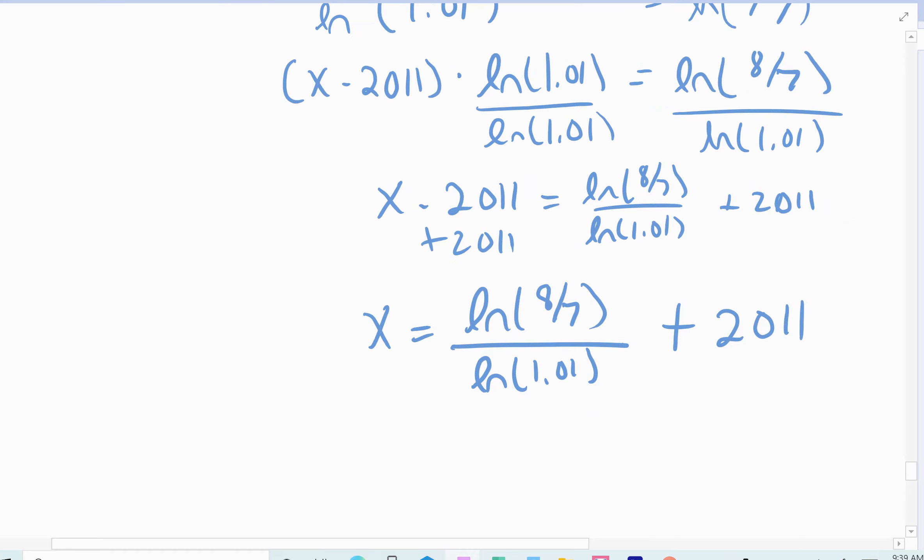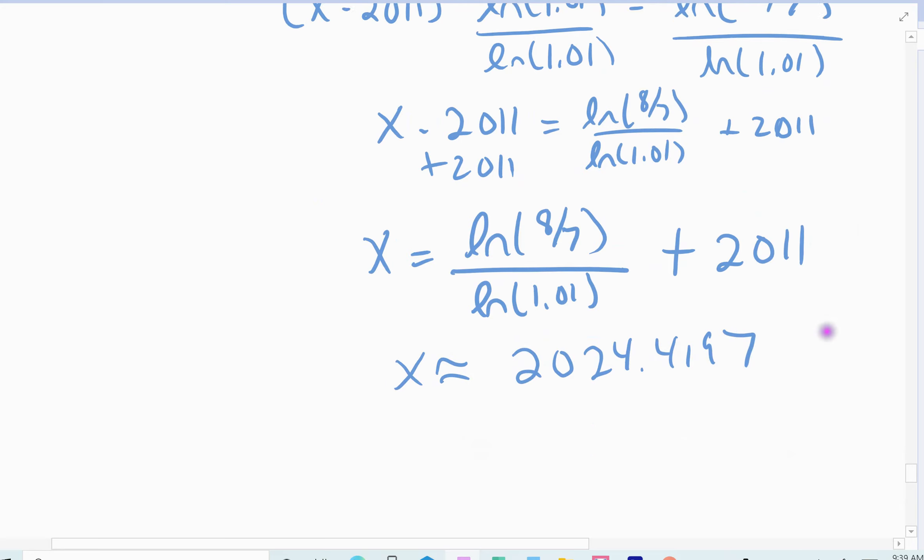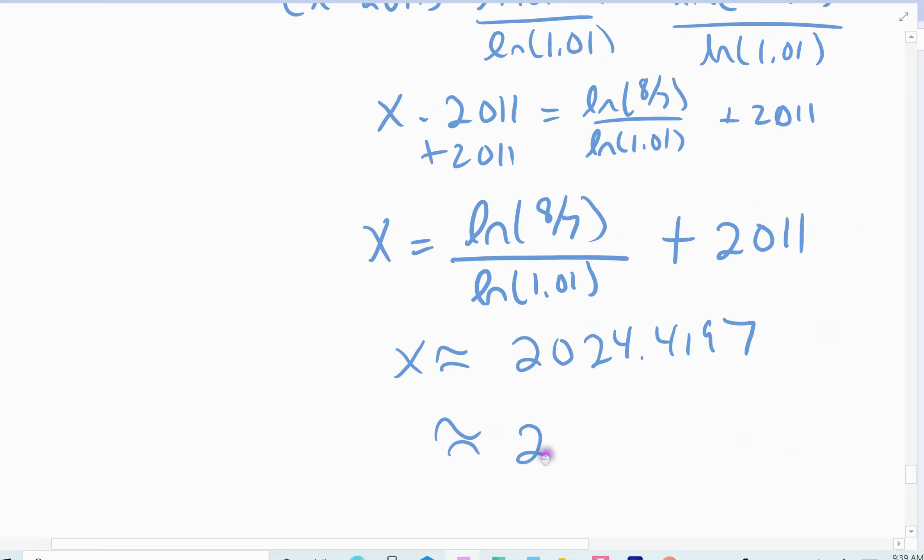So that's exactly what x is. And then you find the approximate. So x is approximately 2024.4197. And so if I round to the whole year at about 2024, but almost halfway actually between 2024. But rounding to the whole year. In the year 2024, the expectation based on this model is that we should reach 8 million.